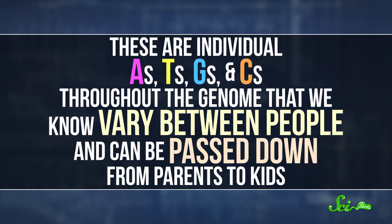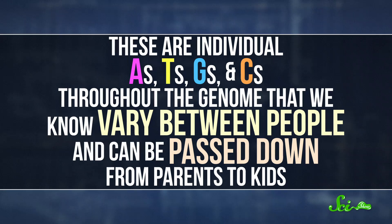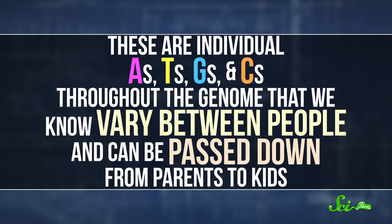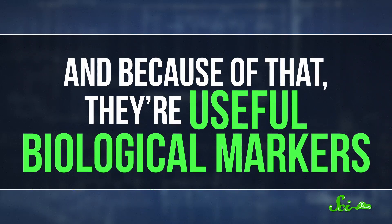SNPs are individual A's, T's, G's, and C's throughout the genome that we know vary between people and can be passed down from parents to kids. And because of that, they're useful biological markers. In a way, SNP analysis is similar to STR analysis, except it's cheap and easy to test for tens of thousands of these at once. So that's what's going on when you mail in your DNA — most companies aren't directly sequencing your entire genome; instead, they're using technology that checks your DNA for a whole bunch of SNPs. Most importantly for detectives, because there are so many SNPs and they change less over time from mutation, SNP testing is much better than STR analysis when it comes to identifying far-flung relatives.